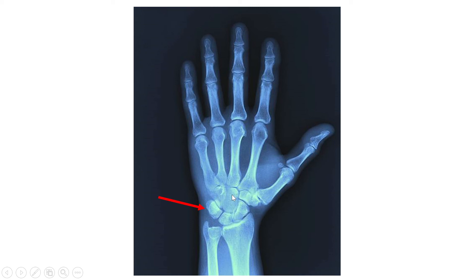Now these are the metacarpals — there are five metacarpals: first, second, third, fourth, and fifth. We identify the first because it is short and stout compared to the other four metacarpals. These are the phalanges — there are 14 in number: two for the thumb and three for the other fingers.